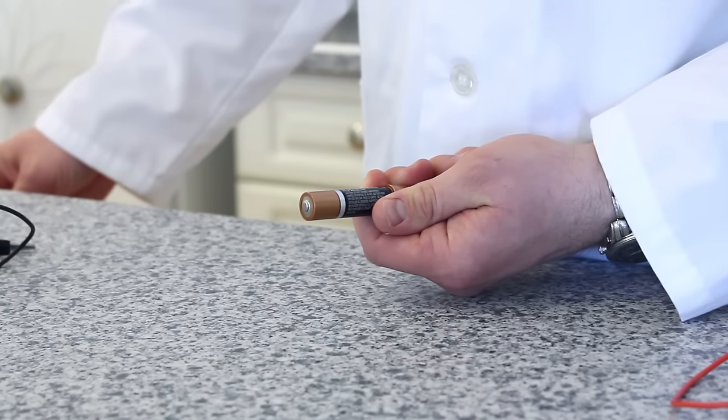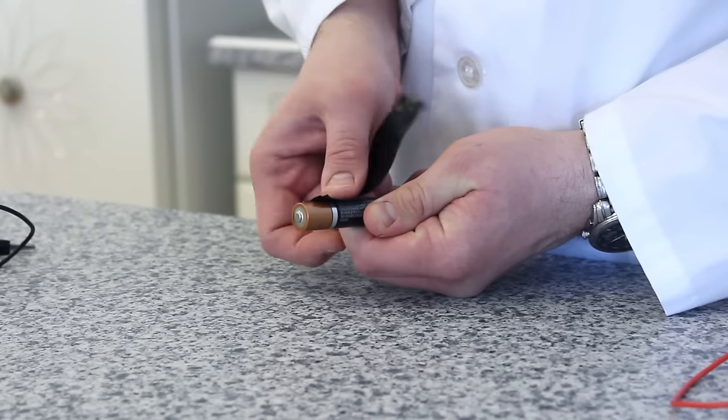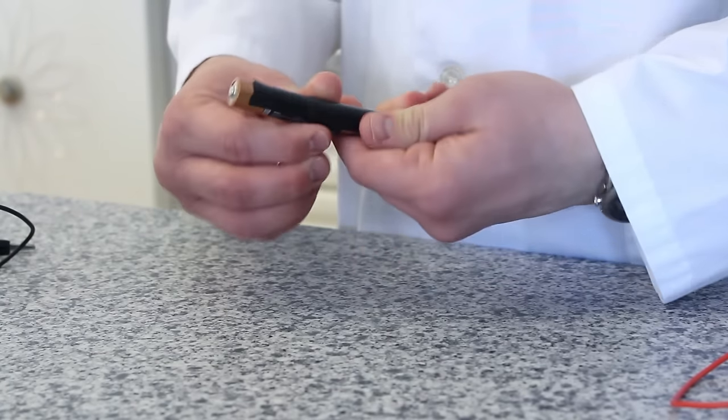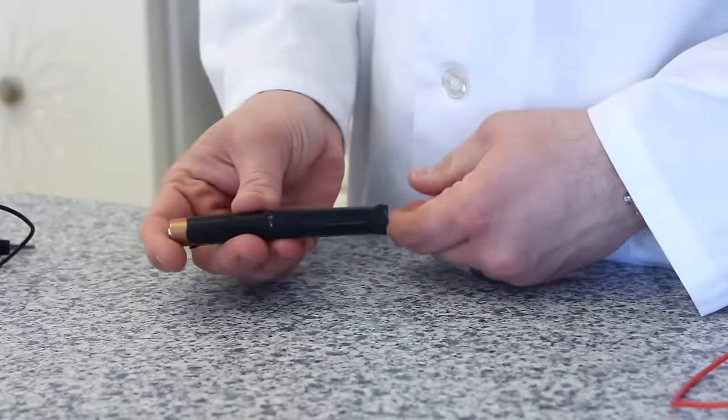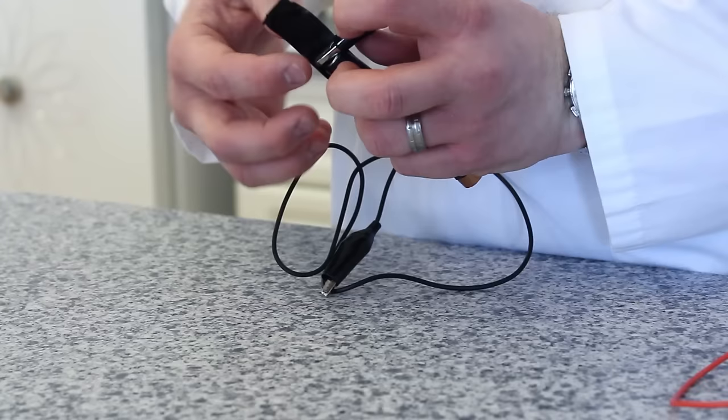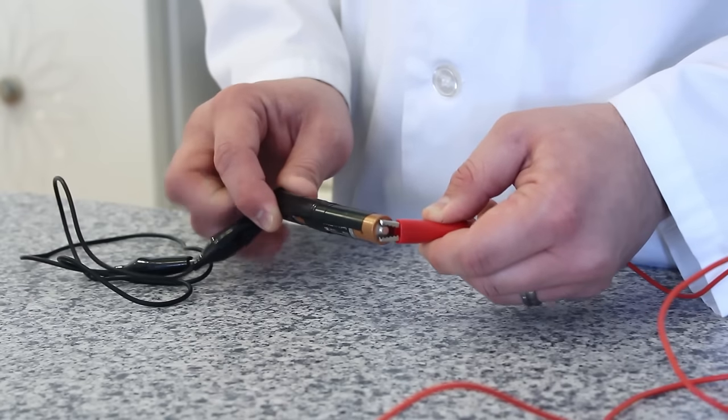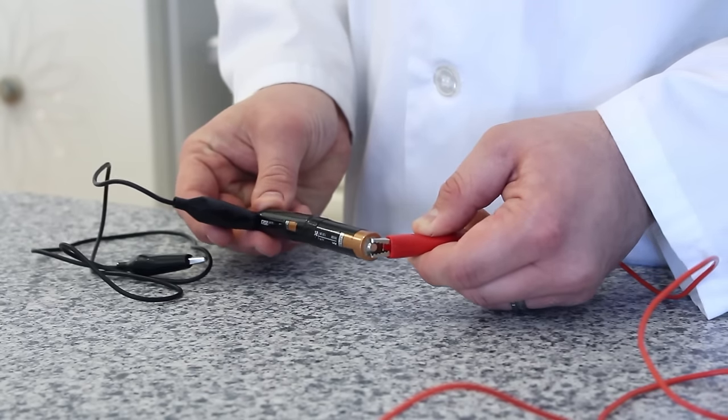To make the circuit component of our experiment, take two AA batteries and tape them positive end to negative end with some electrical tape. Then take your two alligator clips. Tape one end to the negative. And the second alligator clip just clip onto the positive end of the battery stack.